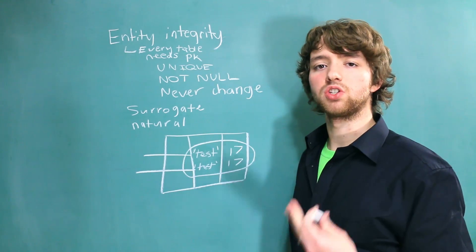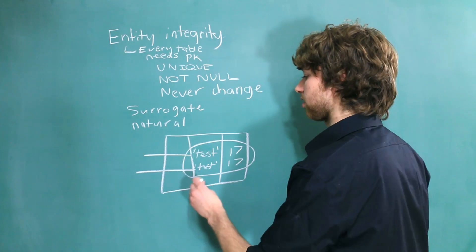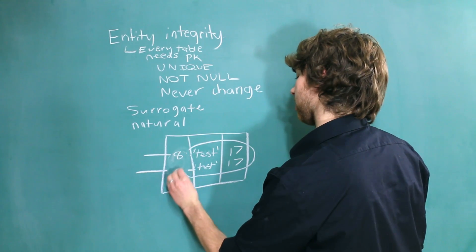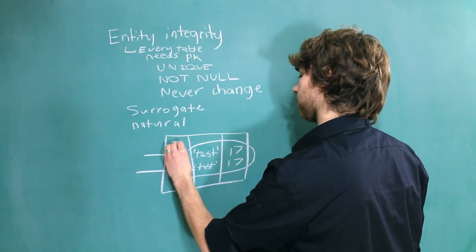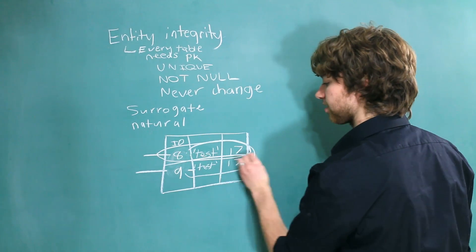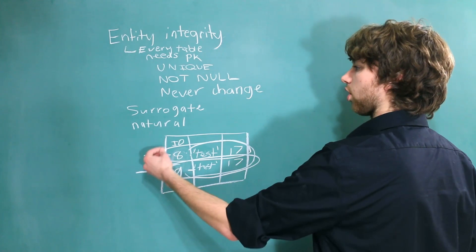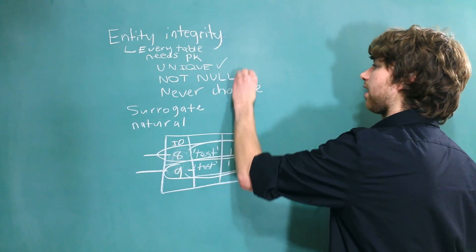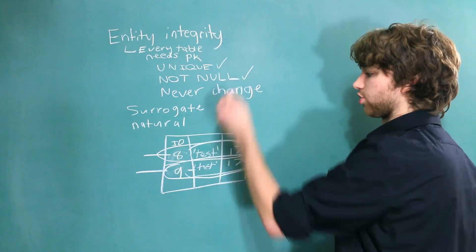But if we have a primary key, we can always assume that they're two different things. So for example, if we have here eight and nine, and this would be like the ID, we know that this describes an entity and this describes an entity. So these are unique, check. They're not null because every single one has a value, and it has to never change.